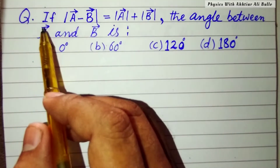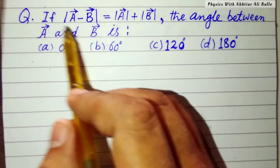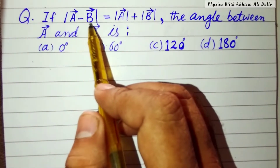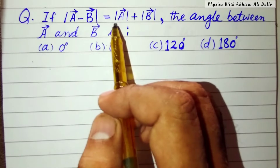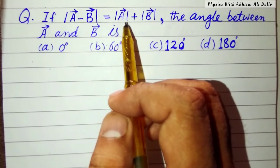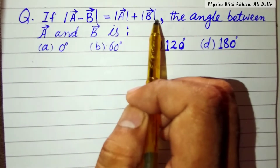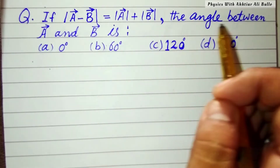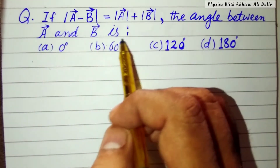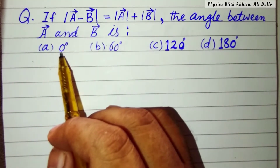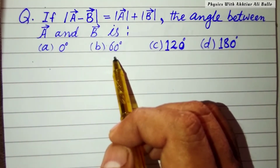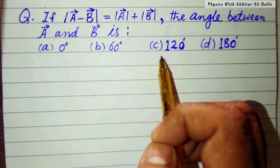The question is: if the magnitude of vector a minus vector b is equal to the magnitude of vector a plus the magnitude of vector b, the angle between a and b is: (a) 0 degree, (b) 60 degree, (c) 120 degree, (d) 180 degree.